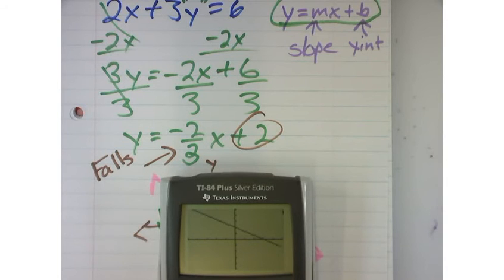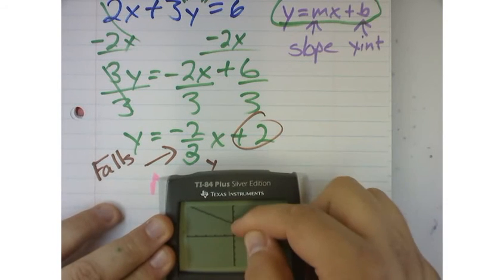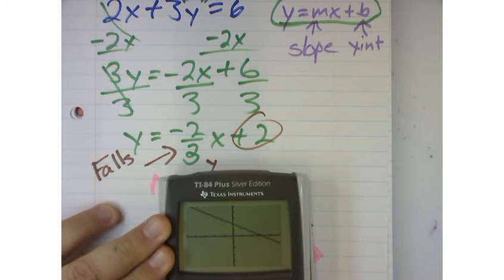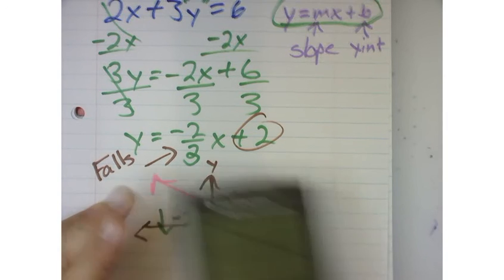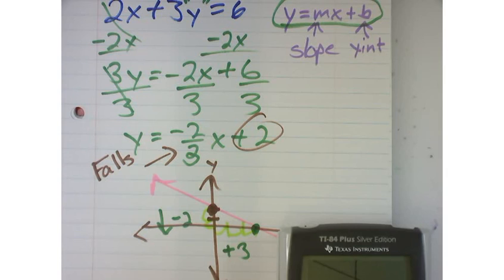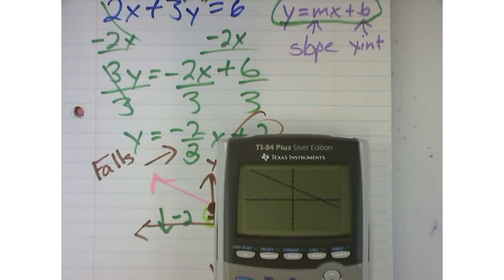And see where it crosses? The y-intercept is at 2, right? Each one of those little ticks is, you know, you're counting by 1. And then my x-intercept occurs at 3, which is just like my graph. So I must have done it correct. Any questions?